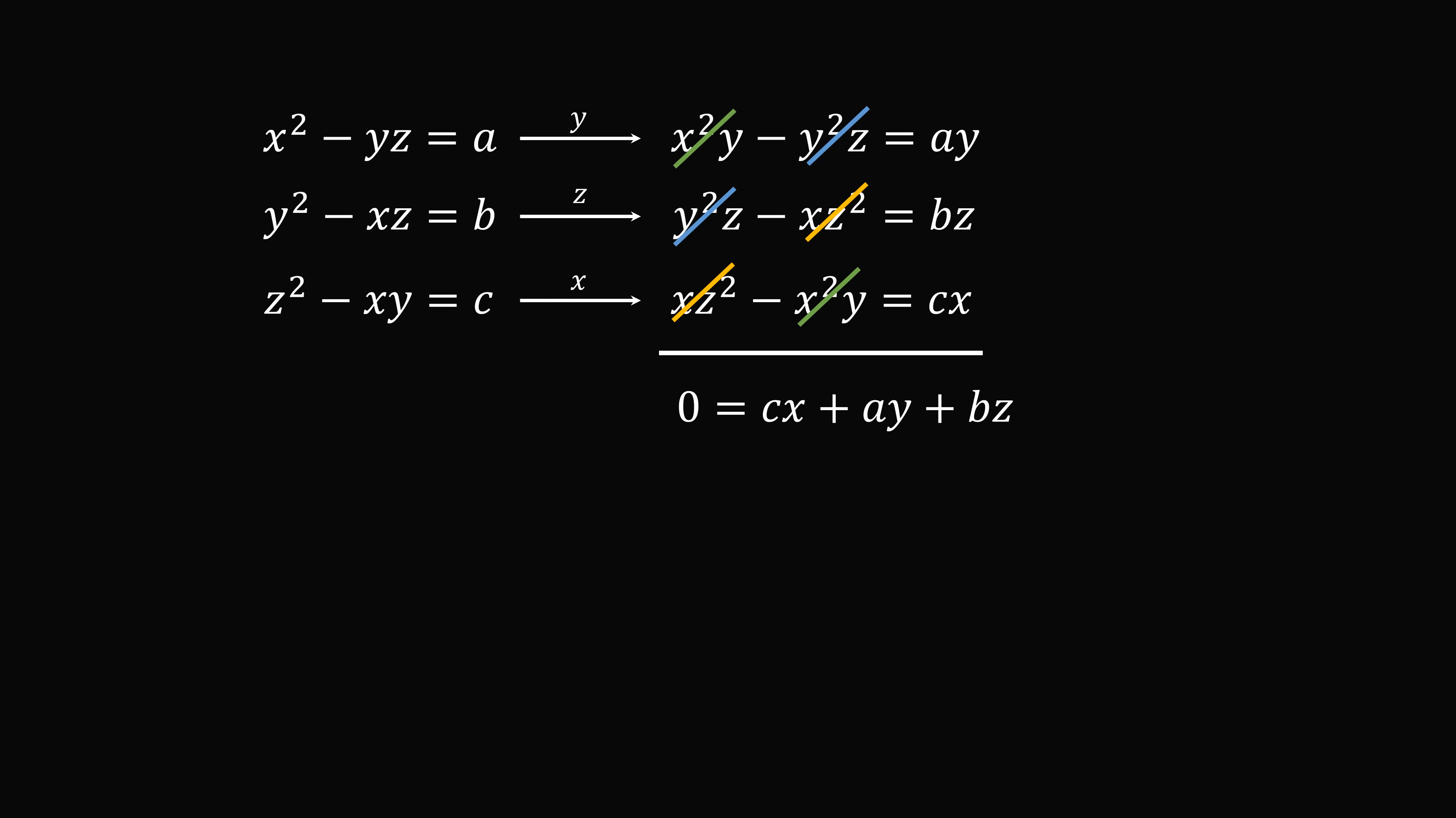We can write this equation in vector form, where 0 equals the vector (x, y, z) dot the vector (c, a, b). Let's put this equation to the side, and now we'll do this cancellation in one more way.